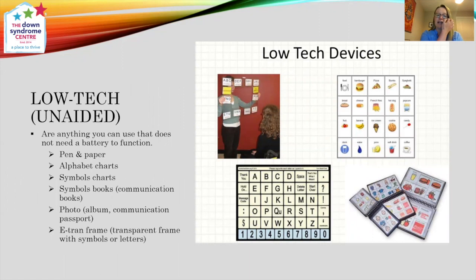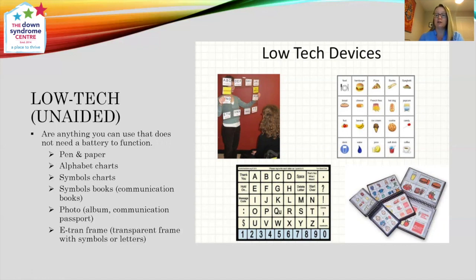Low tech is anything that you do not need a battery to function — pen and paper. We can have an alphabet chart, a symbols chart with pictures, communication books. These usually have lots of different categories and can be colour coded to help people find their vocabulary quicker. Photo albums and communication passports are low tech. And e-trams — a transparent frame that has symbols and letters that are used to communicate.